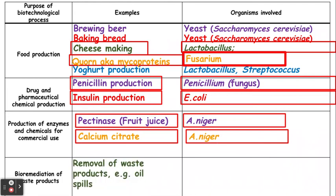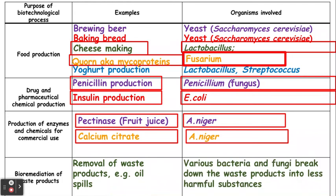The last application is bioremediation of waste products. What happens here is we use different bacteria and fungi to break down waste products into less harmful substances. This includes things like oil spills and sometimes human waste as well.